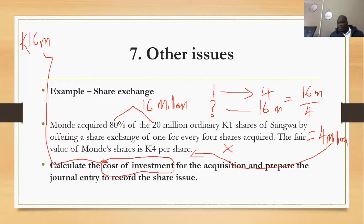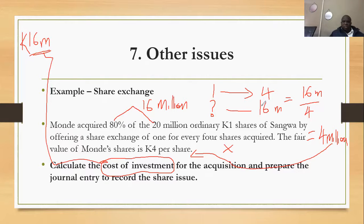We are told to prepare the journal entry to record the share issue. So the cost of the investment is K16 million. We are going to debit the investment account. The four million shares were issued at one-quarter, their par value, so share capital will be credited at four million quatria.